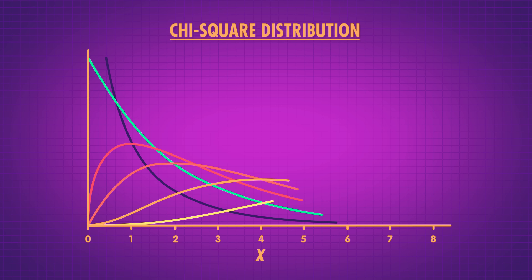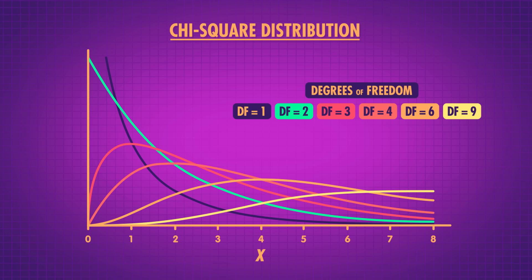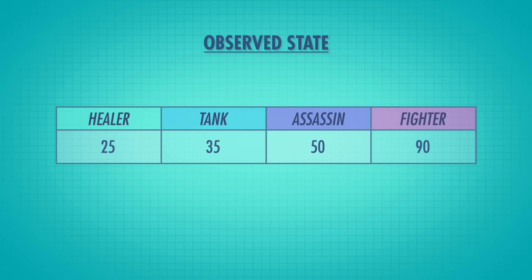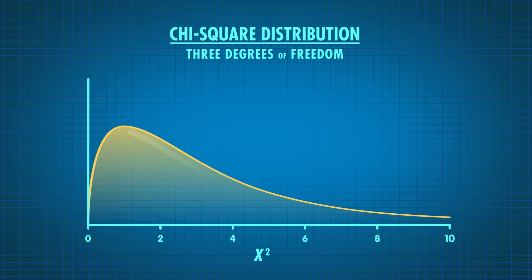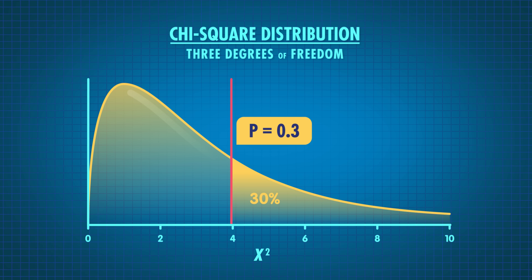Like a t-statistic, a chi-square statistic has a distribution we can use to find a p-value, and like t-distributions, chi-square distributions change their shape as degrees of freedom change. To find our degrees of freedom, we think about what kinds of information we have. Our frequency table had 4 cells — one for each character type — giving us 4 independent pieces of information. But once we know the total count of 200 players, the 4 values aren't all independent anymore, because knowing 3 and the total lets you calculate the 4th. So our degrees of freedom are 4 minus 1, which is 3. Using our chi-square distribution with 3 degrees of freedom, our p-value is 0.3. Since our cutoff was 0.05, we fail to reject the null — the sample didn't give us statistically significant evidence that the game developer's percentages were wrong.